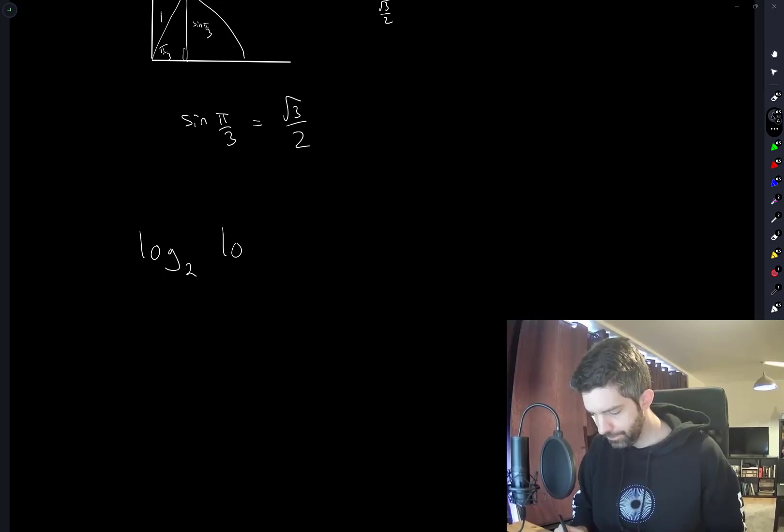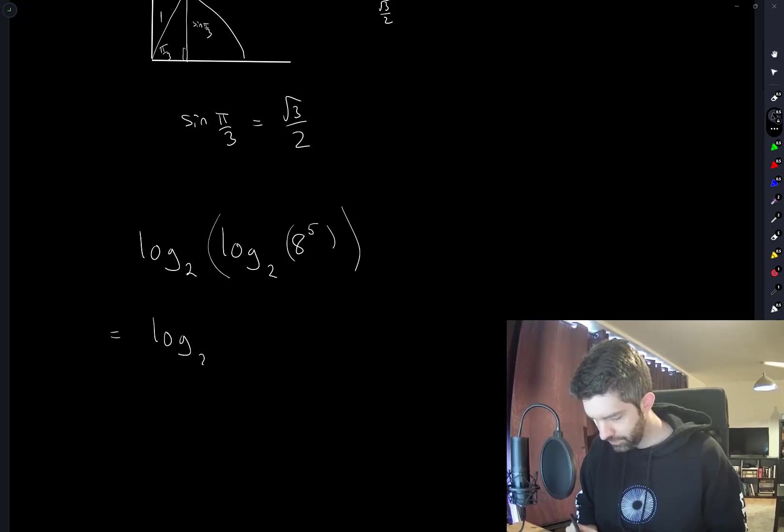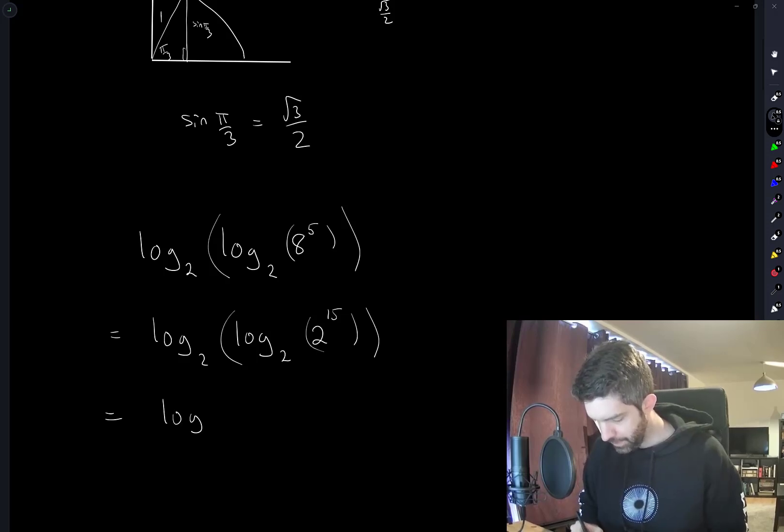Log base 2 of log base 2 of 8 to the 5. Simplify the inner part. So we have log base 2 of 2 to the power of 15. So this is log base 2 of 15.